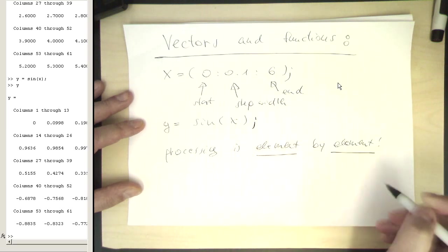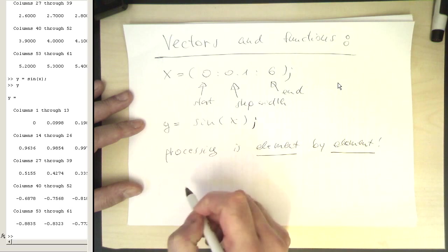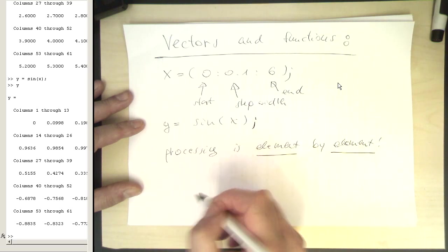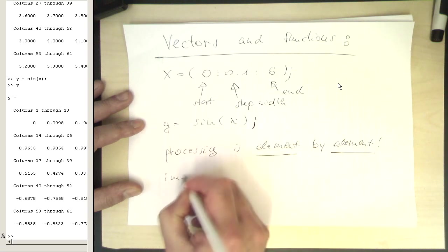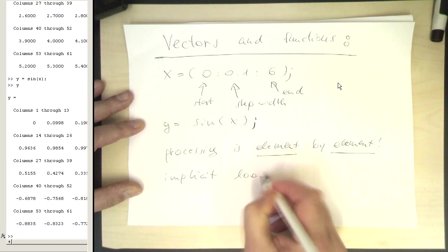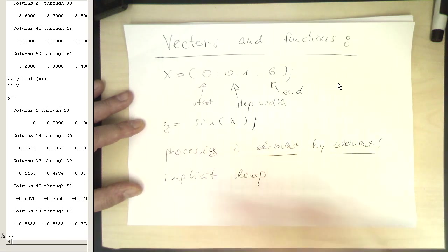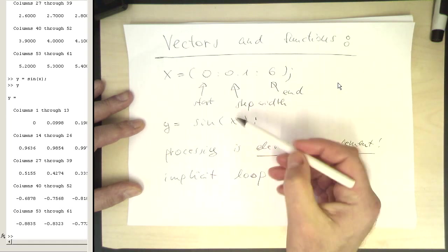So that's important. Basically with this way of processing, we are avoiding loops. So we are implicitly generating a loop. This is implicit. Implicit loop we don't need to do here in MATLAB. This is automatically done just by processing every element step by step.